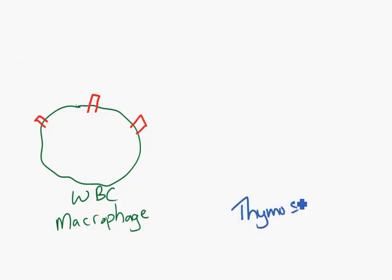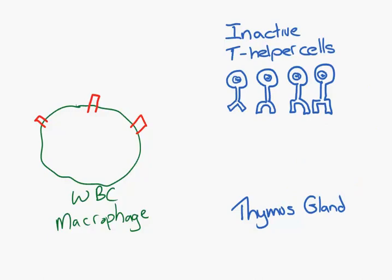Now in the thymus gland you have many inactive T helper cells. I'll just draw some now. Here's our inactive T helper cells. Now our macrophage makes its way to the thymus gland and presents the antigen to each inactive helper cell in order to try and activate it.